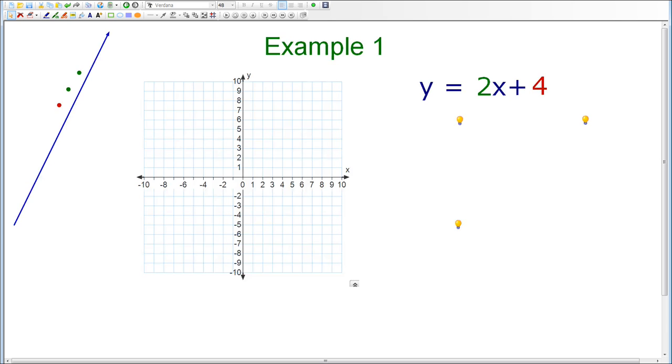We're going to take a look at example number 1 on the website, and the equation that we're being asked to graph is y equals 2x plus 4. When we look at any linear equation, if it is written in slope-intercept form, which is y equals mx plus b form,